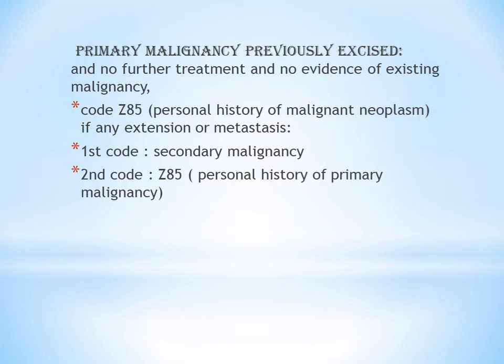The second condition is the patient had a primary malignancy, it was removed, and now when the patient comes to the hospital, an extension or metastasis is seen. In that case, the metastasis portion is coded as secondary malignancy. You also give a Z85 code to indicate the patient's personal history of primary malignancy. So: if no extension or metastasis, give Z85; if extension or metastasis is present, give secondary malignancy as the first code, then Z85.